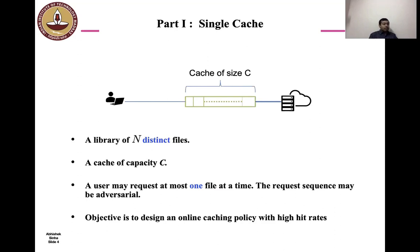The user requests one file per slot. If the file is present in the cache, we have a cache hit, yielding unit reward. Otherwise, we have a cache miss and the user is routed to the data center for downloading the file. A cache miss yields zero reward. Our goal is to design an online caching policy with the maximum hit rates.